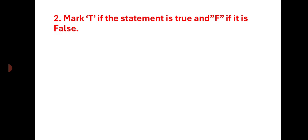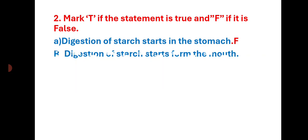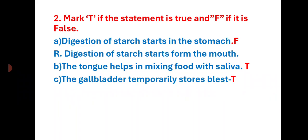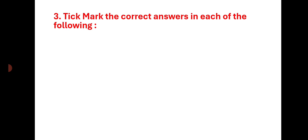Tick mark T if the statement is true and F if it is false. Digestion of starch starts in the stomach — False. Digestion of starch starts from the mouth. The tongue helps in mixing food with saliva — True. The gallbladder temporarily stores bile — True. The ruminants bring back swallowed grass into their mouth and chew it for some time — True.